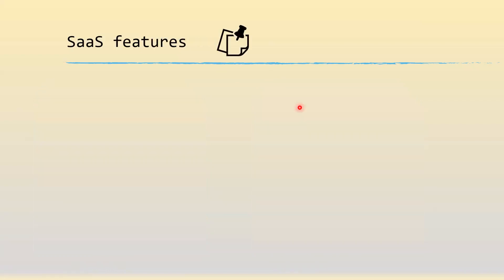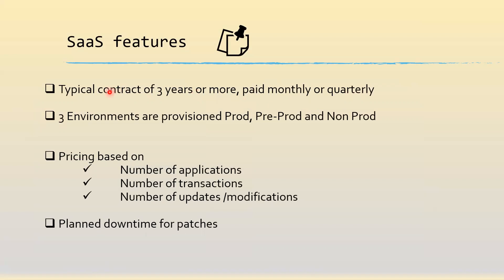What are the typical features of SaaS? Typically these contracts run for three years or more. They are flexible in nature — it could be paid monthly or quarterly. Usually three environments are provisioned: production, pre-production, and non-production, typically the UAT. More environments on a chargeable basis can also be taken up.